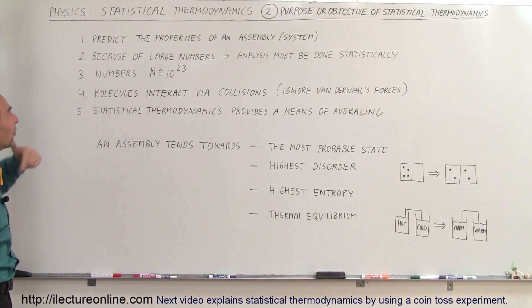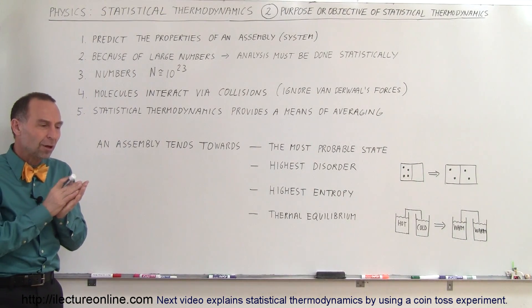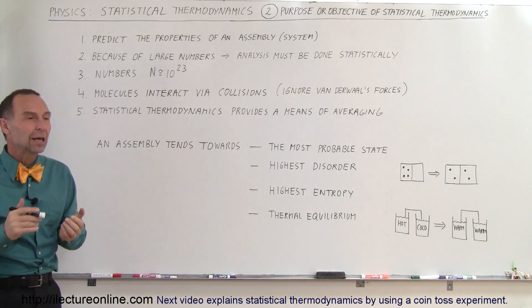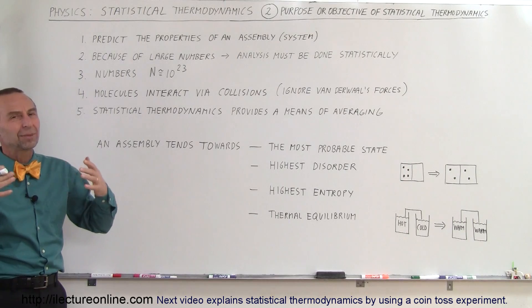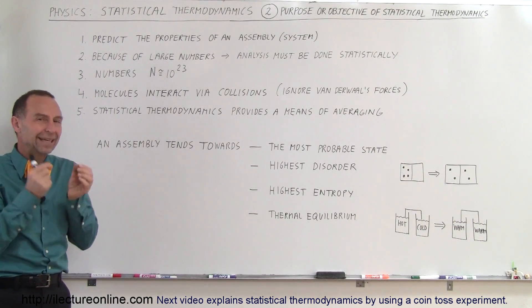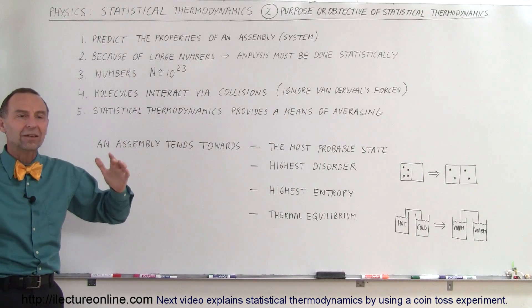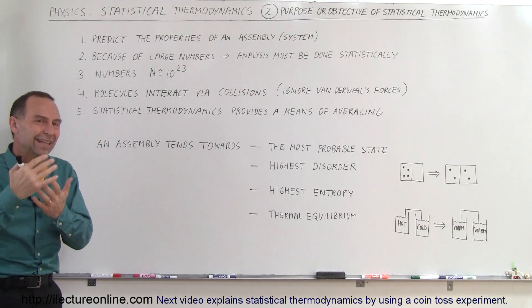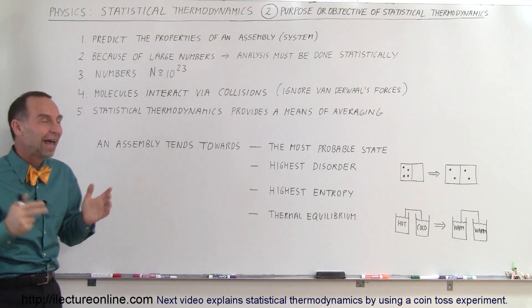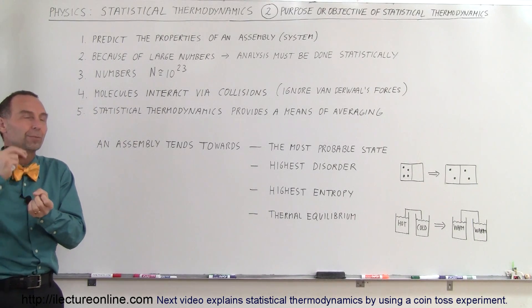First of all, it enables us to predict the properties of an assembly. So it's not so much a matter of calculating the conditions and properties of an assembly, but to predict. Usually the assembly is a very large quantity of things, and for us to go through each item, each individual item, and calculate it, it's pretty difficult to do. But we can predict en masse, on average, what is the tendency, what is the most probable case, the most likelihood of events happening. And so that's why we use statistical thermodynamics, to be able to predict.